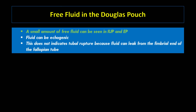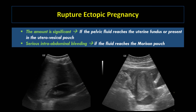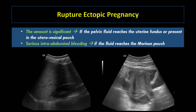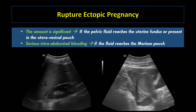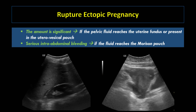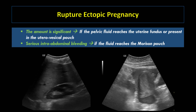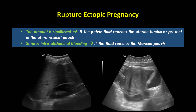Free fluid in the Douglas pouch is common. A small amount of free fluid can be seen in both normal intrauterine pregnancy and ectopic pregnancy. The fluid can be echogenic, and this does not indicate tubal rupture, because fluid can leak from the fimbrial end of the fallopian tube. The amount of fluid is significant if the pelvic fluid reaches the uterine fundus or is present in the utero-vesicle pouch. Here, posterior to the uterus, there is an echogenic hematoma isoechoic to the uterus, and a significant amount of free echogenic pelvic fluid reaching the uterine fundus is seen in the utero-vesicle pouch. If free fluid is seen in Morrison's pouch, this indicates serious intra-abdominal bleeding.